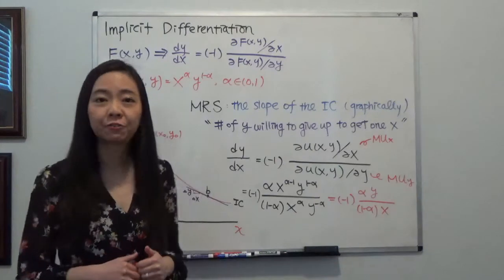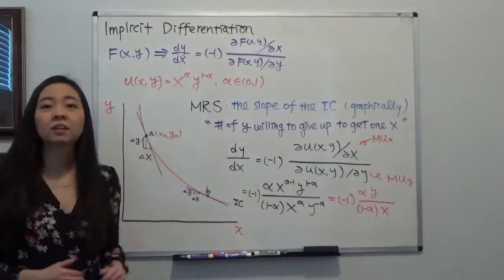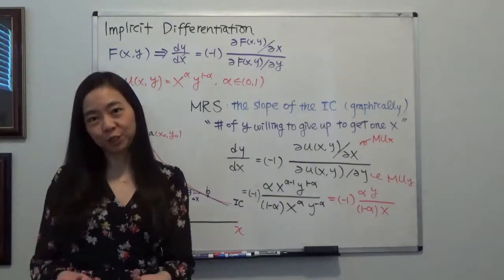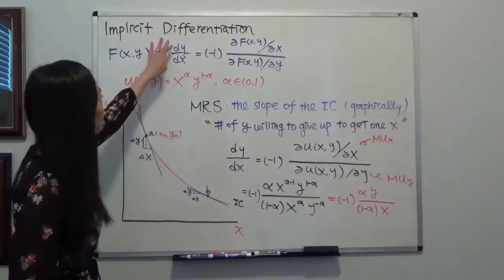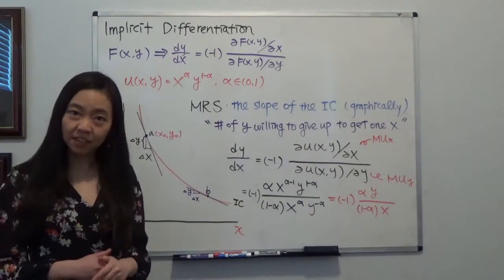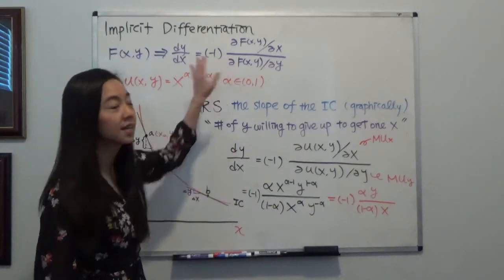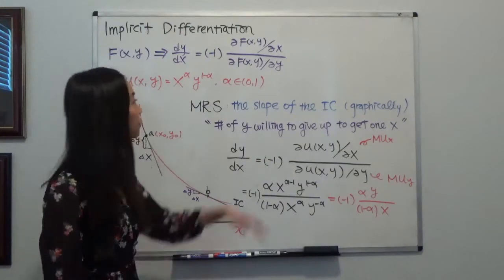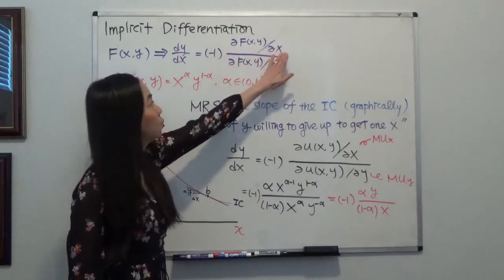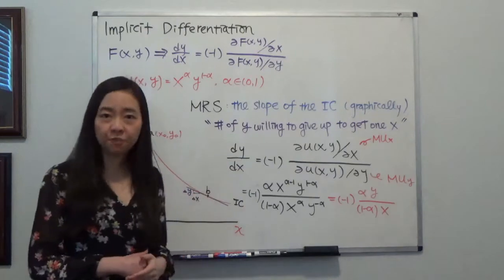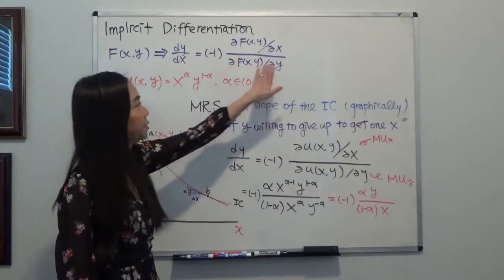Suppose you have a function of x and y which is smooth and differentiable, then dy/dx is equal to negative 1 times the partial derivative of function f with respect to x divided by partial f partial y.